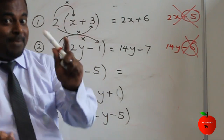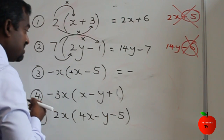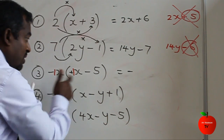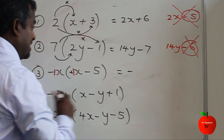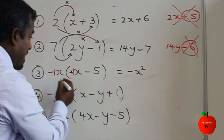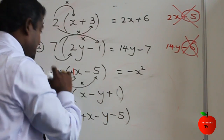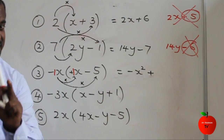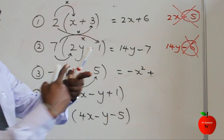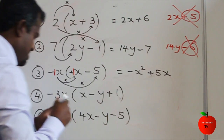Question three — sign, number, letter: sign is minus, plus; minus times plus is minus. Number: x means 1, so 1 times 1 is 1. Letter: x times x is x squared. Question four: sign is minus, minus times minus is plus — be very careful here. Then 1 times 5 is 5, letter is x.